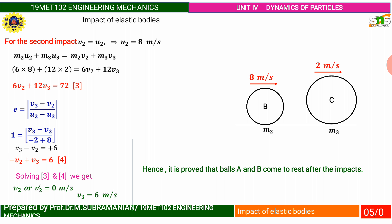Momentum equation. Substitute the values: 6 into 8, 12 into 2, 6 into V2, 12 into V3. Then form the third governing equation from conservation of momentum: 6 V2 plus 12 V3 equals 72.